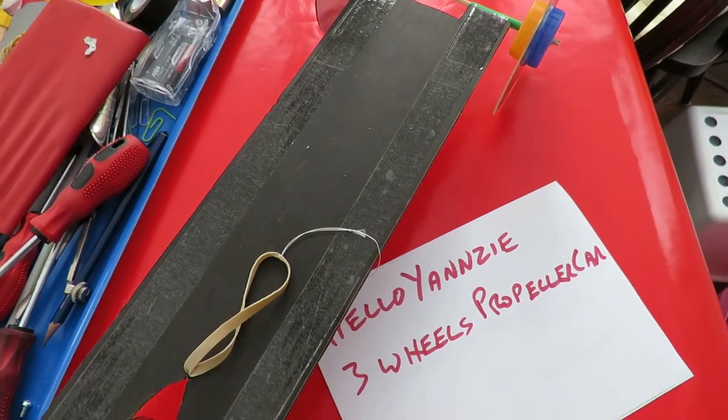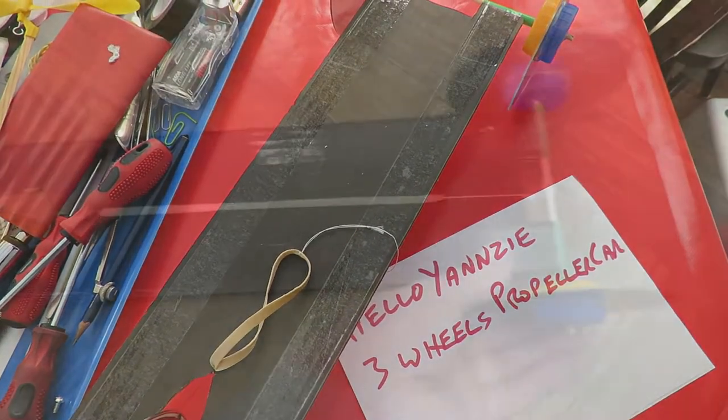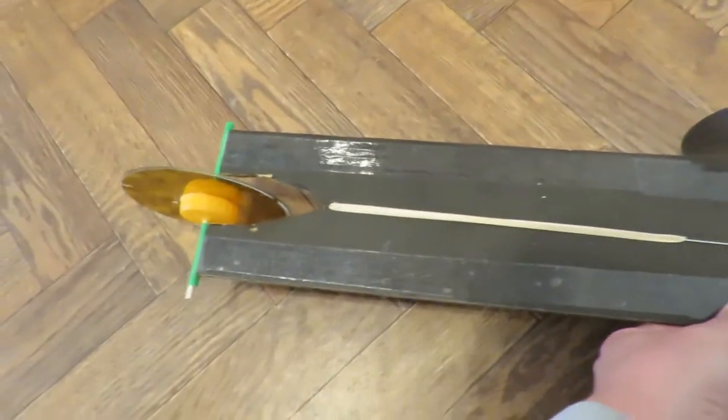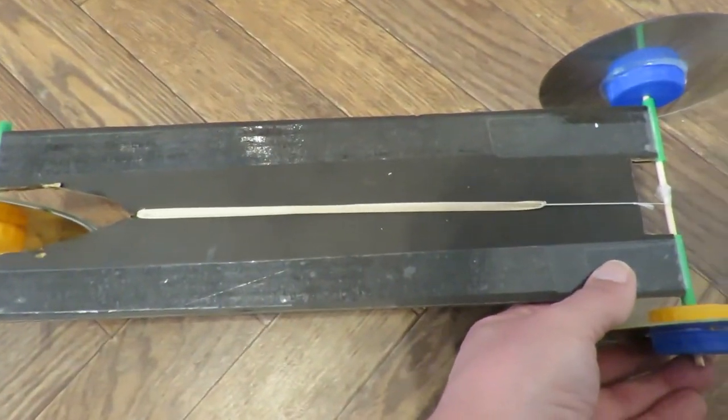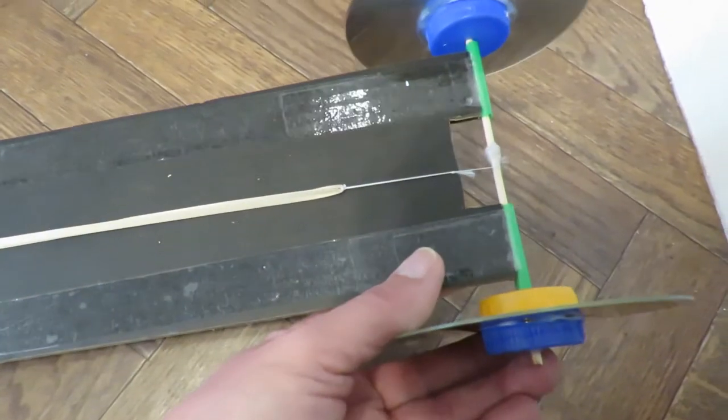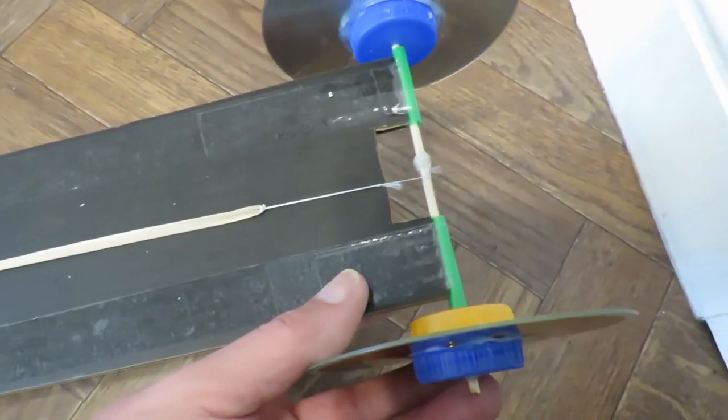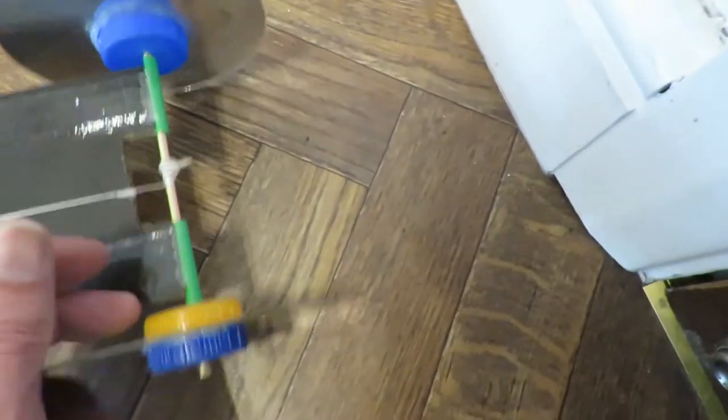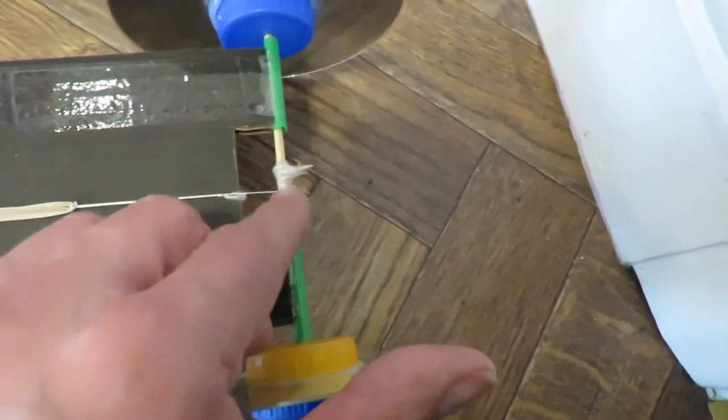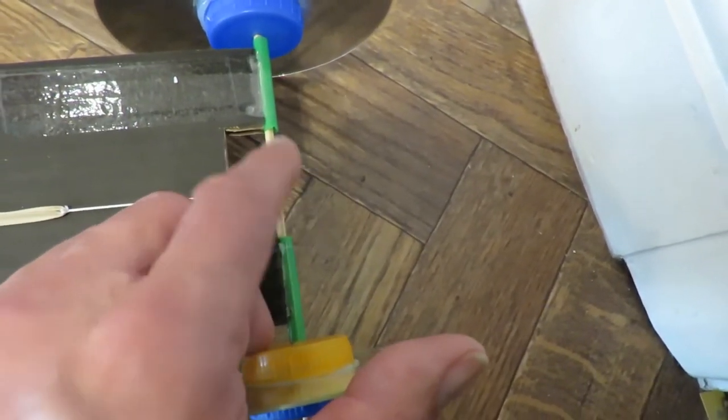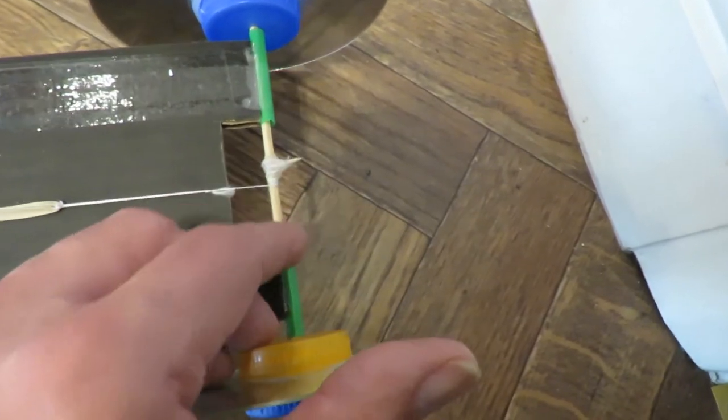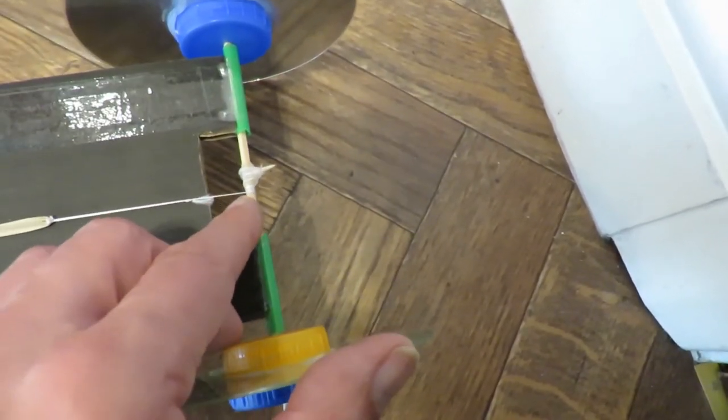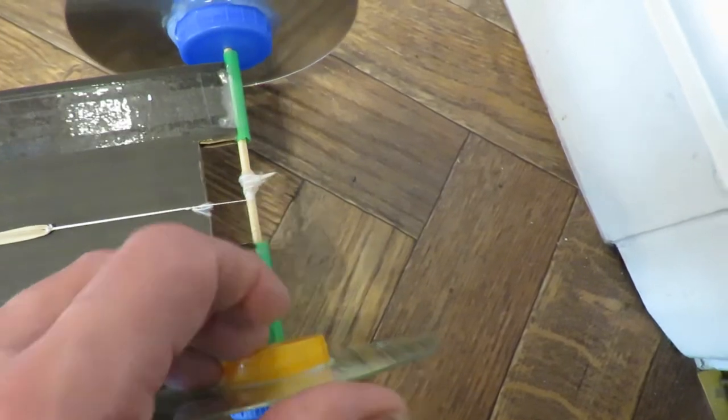But we'll do a demo first of it running as a rubber band powered car. So here we are, I've got the rubber band with a bit of cotton tied to it and the cotton is attached to the back wheel. There's actually a bit of barbecue skewer sticking out. I've glued it at right angles in a T-shape and that's what the string hooks onto.